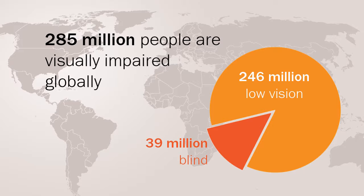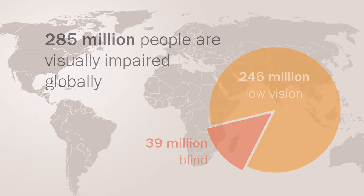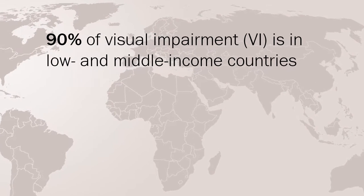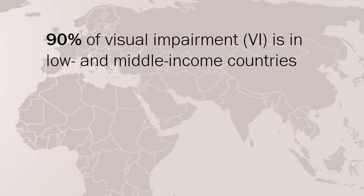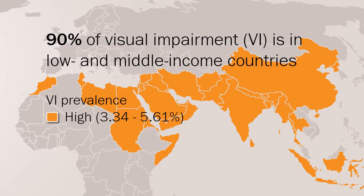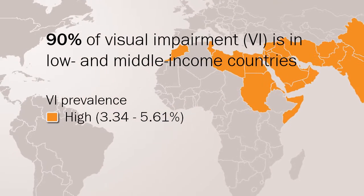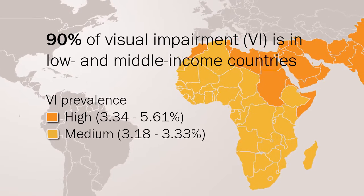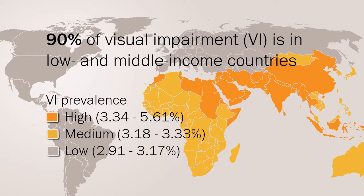When we compare the distribution of visual impairment across the world, we find that it is unevenly distributed, with 90% of it in low and middle income countries. The highest prevalence of visual impairment, between 3.34 and 5.61%, is found in India, China, the Middle East and parts of Southeast Asia. Most of Sub-Saharan Africa has a prevalence of between 3.18 and 3.33%. The lowest prevalence is found in higher income countries and in Latin America.